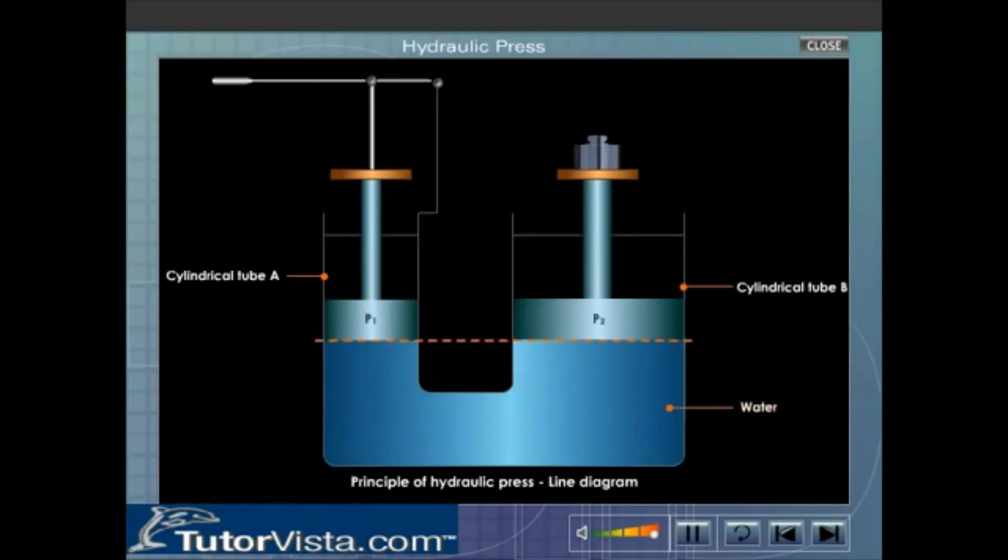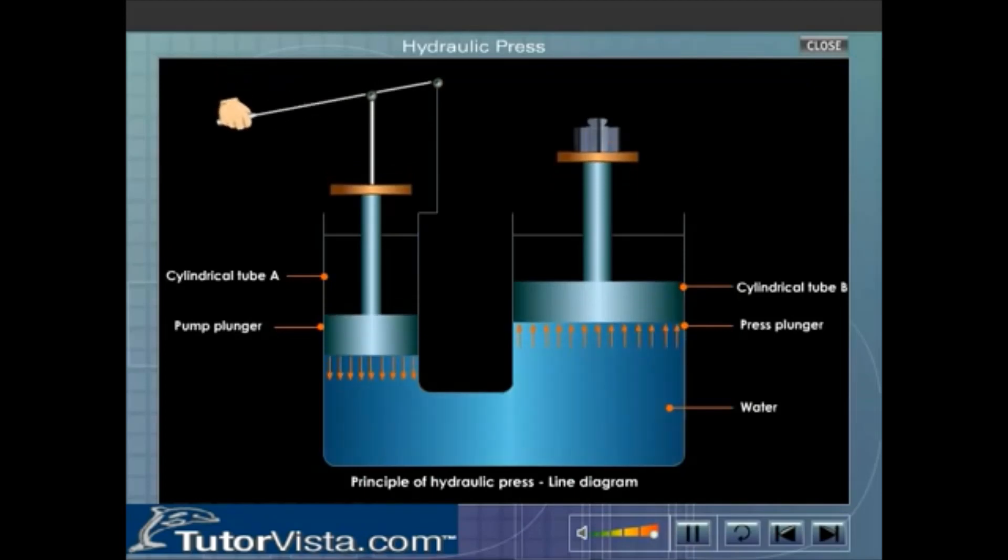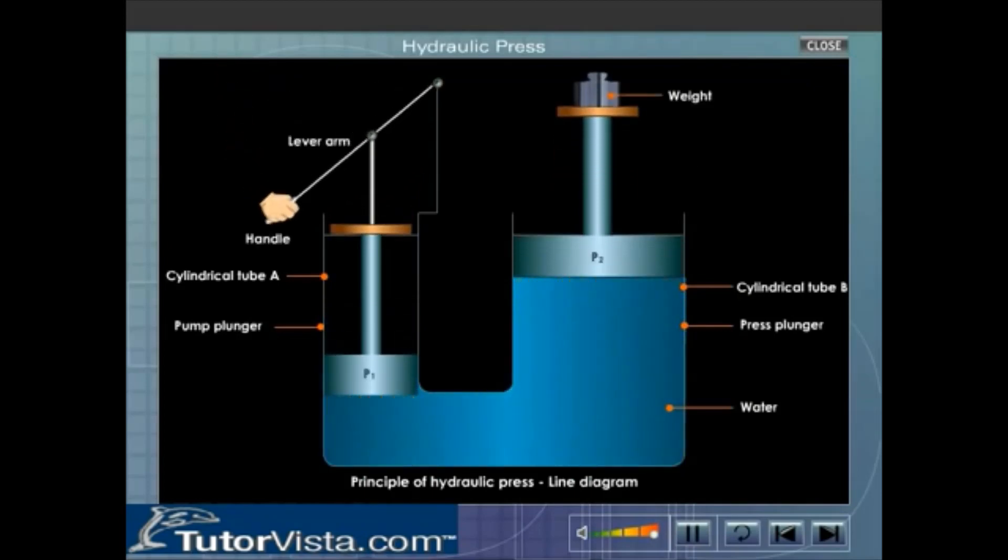The tubes are filled with water in such a way that the level of water in both tubes are equal. The smaller cylinder is called the pump plunger and the larger cylinder is called the press plunger. To press down or raise the pump plunger there is a lever arrangement with a handle.